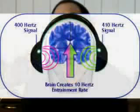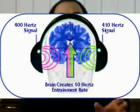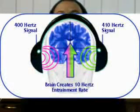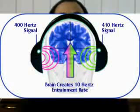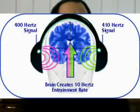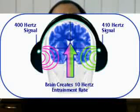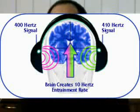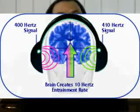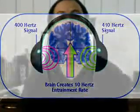For each segment of binaural entrainment, we send a separate audio signal to each speaker in your stereo headphones. As an example, let's say that in one ear we have a 410 Hz signal, while in the other ear we send a 400 Hz signal. As you listen to these two sounds, your brain perceives the difference of 10 Hz between the two sounds and generates its own 10 Hz brainwave response. As brainwaves go, this can create a feeling of calm awareness in the listener.